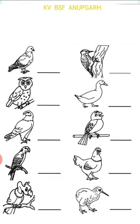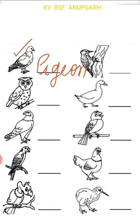So we will write the spelling of the first bird. Which bird is this? Yes — tell me. Good. Pigeon. P-I-G-E-O-N. Many children made a spelling mistake with pigeon.